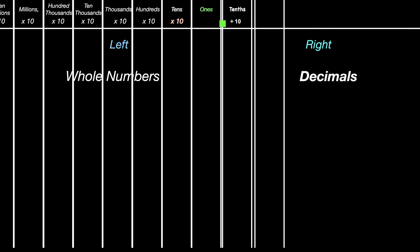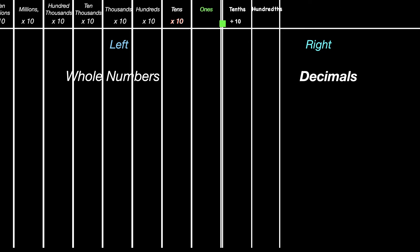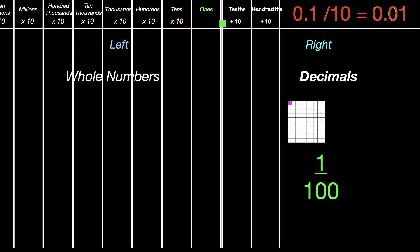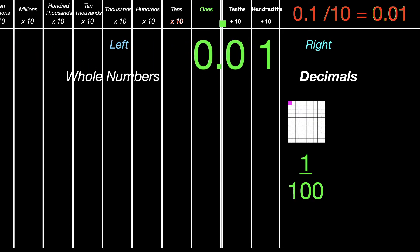Hundredths is the next place value. After the tenths comes the hundredths, and that is also dividing by ten. So for example, if we were to divide one tenth by ten with a calculator, that would equal zero decimal zero one — or in other words, one hundredth. In a model, you can see there's a grid of a hundred and only one is shaded. In fraction form, that would be one hundredth. But in decimal form, we would read that as zero decimal point zero one. Notice the one is in the hundredths place value, and that's why we read it as one hundredth.